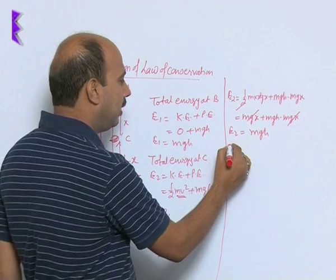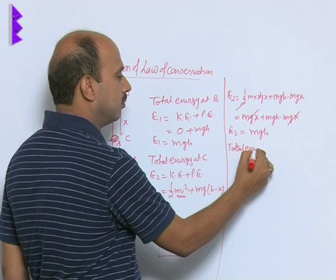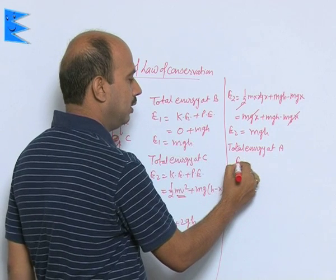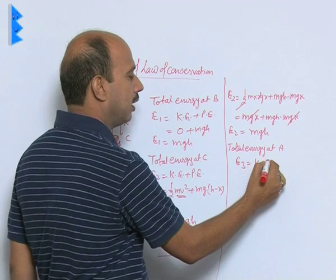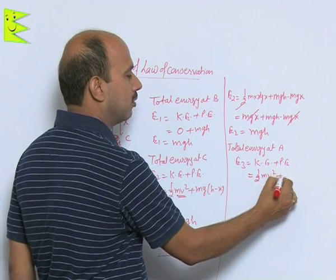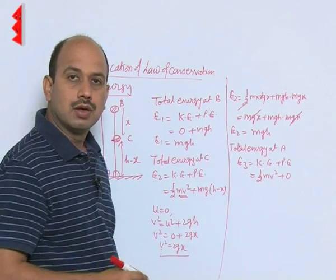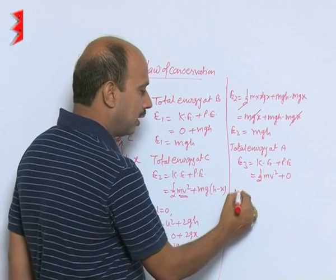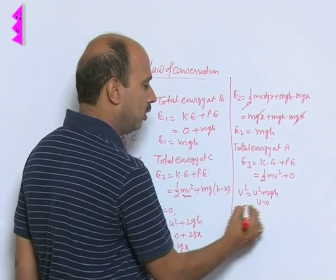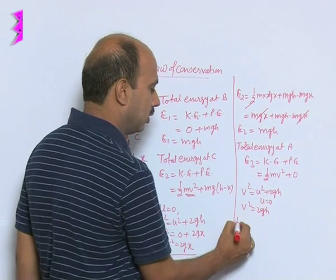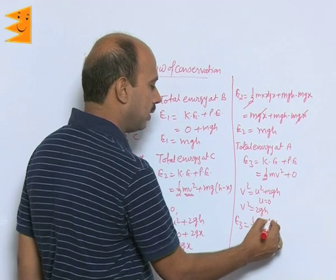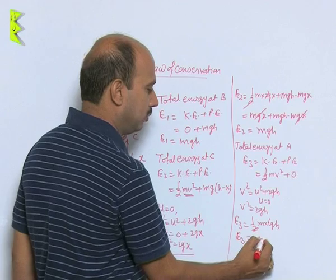Similarly, we can take the total energy at A. Here E3 equals kinetic plus potential. Kinetic energy is half mv squared, plus 0, because height is 0 at A. We calculate V again: V squared equals U squared plus 2gh. U is equal to 0, so V squared equals 2gh. Therefore E3 equals half m into 2gh, which gives E3 equal to mgh.